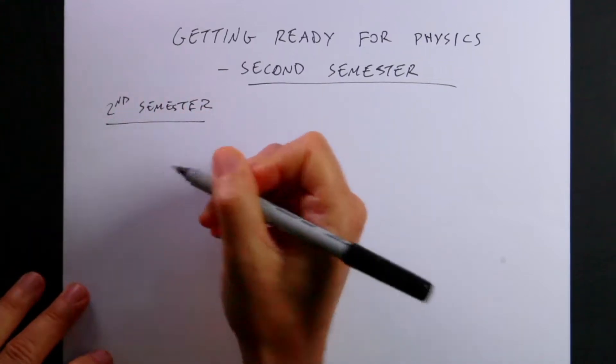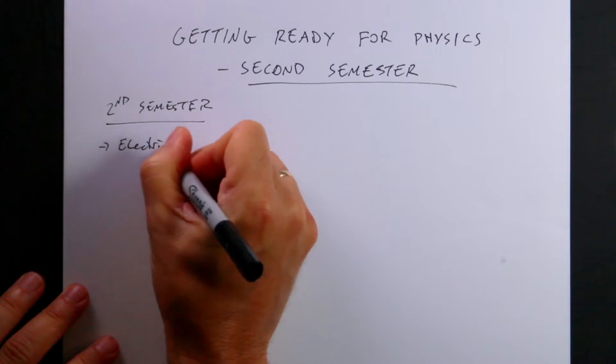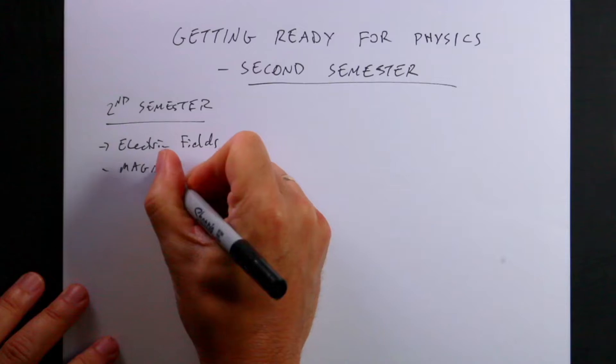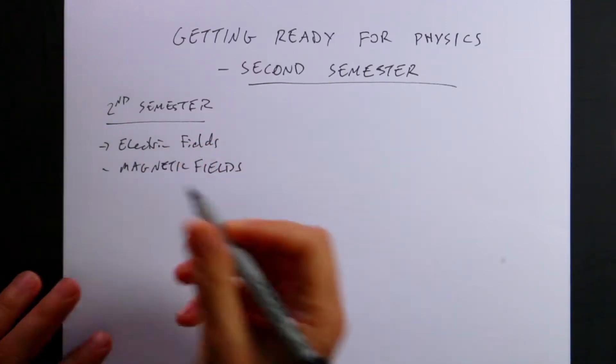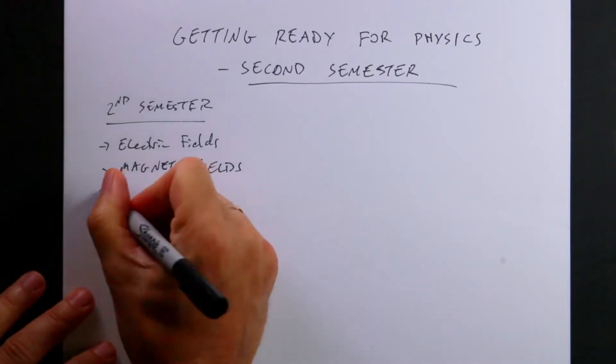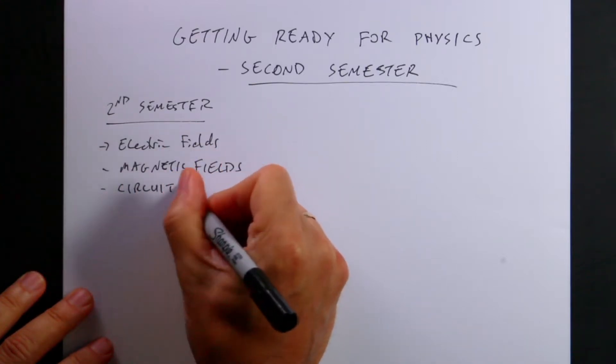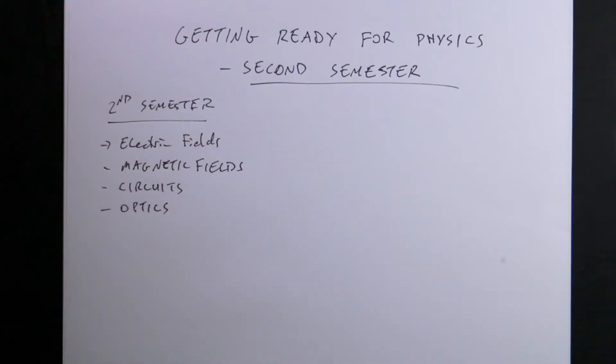I'm assuming this is an algebra-based college physics course. If it's a calculus-based physics course, you probably need to know this stuff too, but you may need to know some other things. Let's talk about the second semester of physics. Typically, what's covered in here is the following: electric fields, magnetic fields. For me, this is it. It's all about the electric and magnetic fields. But then you may also have things like circuits and optics, which can be described in terms of electric and magnetic fields.